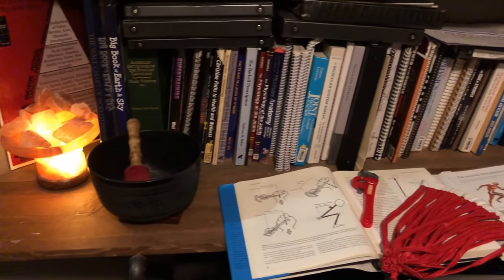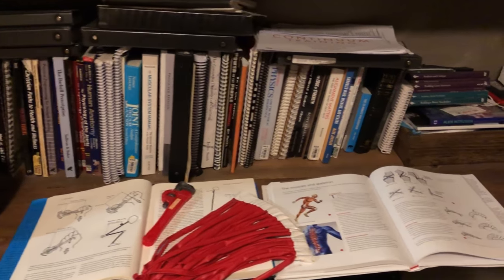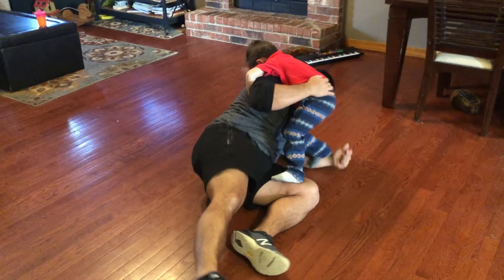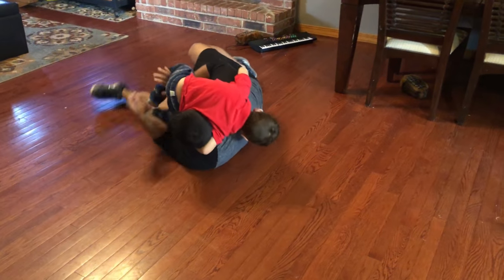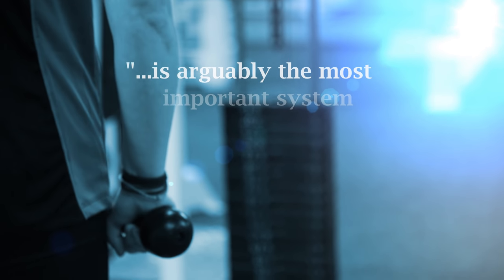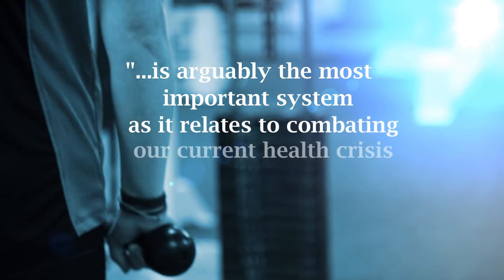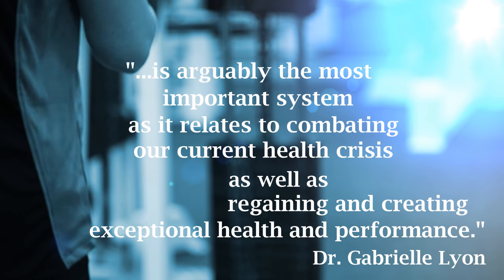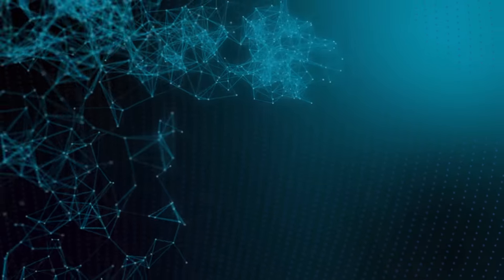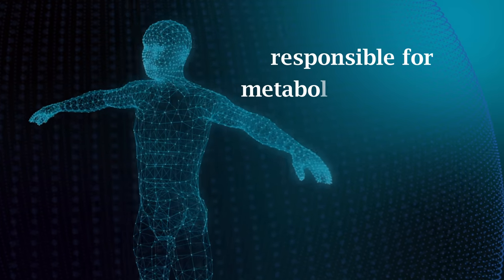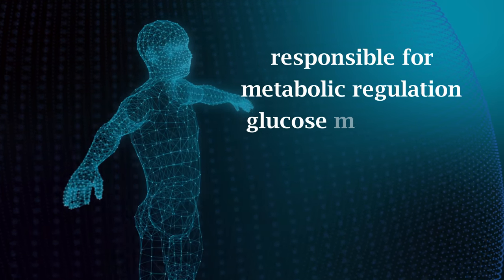Whether I'm able to win the tug of war against the fallen tree branch really is a matter of my muscles being strong enough to generate enough internal torque to overcome the resistance. The ability to generate torque is not the only thing muscles play a role in — your muscular abilities are directly tied to your quantity and quality of life. Improving your body's ability to fight resistance is the primary factor in determining your health. Your muscular system is arguably the most important system as it relates to combating our current health crisis, providing not only our physical architecture and locomotion but our physiological infrastructure as well. Muscle is responsible for metabolic regulation, glucose metabolism, lipid oxidation — it's anti-inflammatory and responsible for growth.